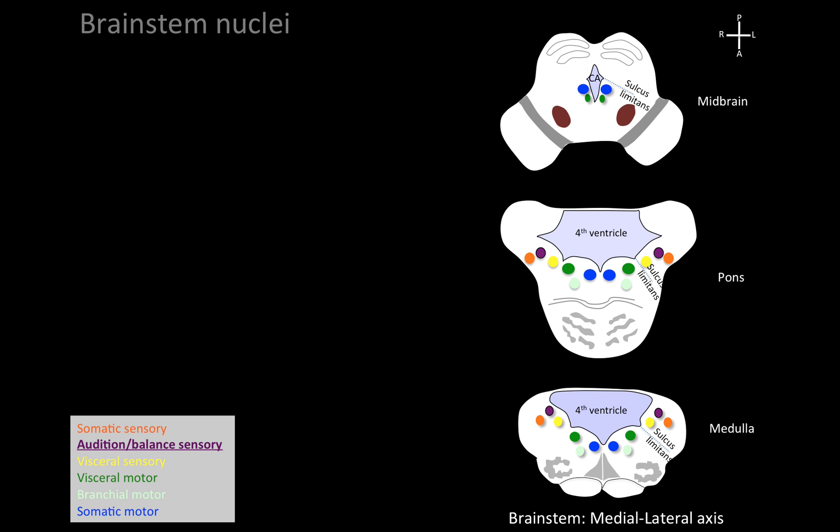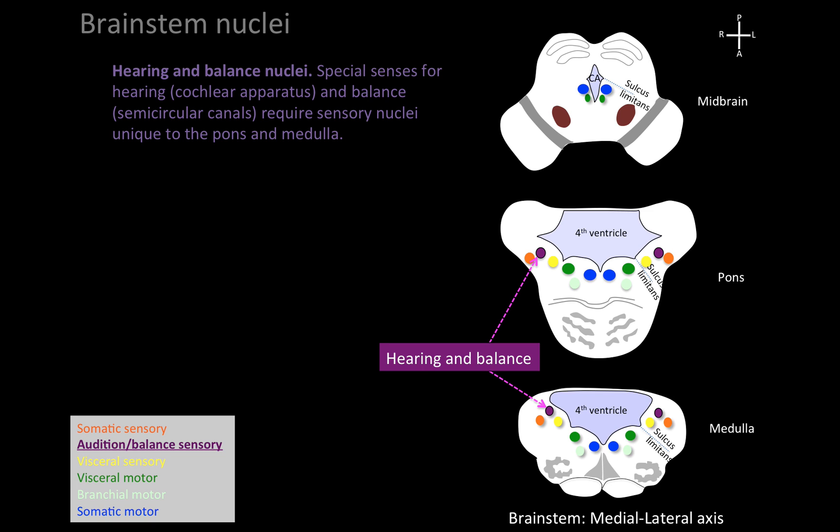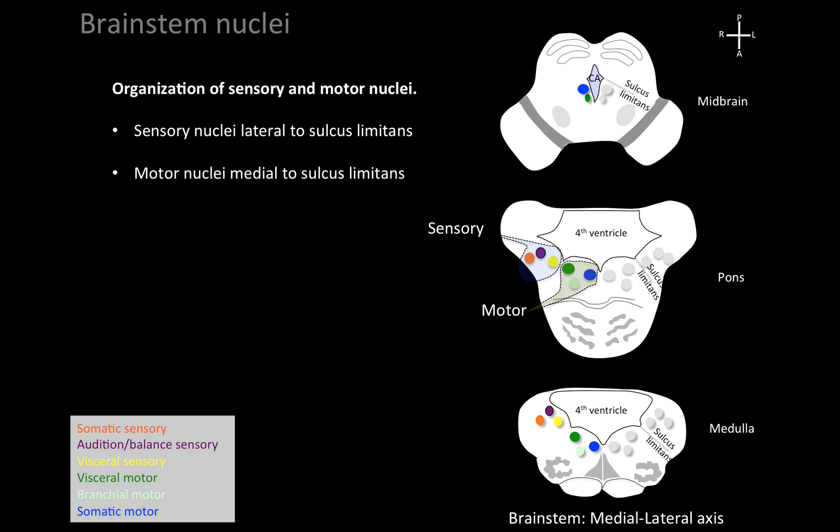The otic placode forms our auditory system for hearing and vestibular system for balance, unique to the head. We introduce hearing and balance nuclei lateral to the sulcus limitans — special senses for hearing via the cochlear apparatus and balance via the semicircular canals, requiring sensory nuclei unique to the pons and medulla, not found in the midbrain. So sensory nuclei are lateral to the sulcus limitans for the brainstem, and motor nuclei are medial to the sulcus limitans.